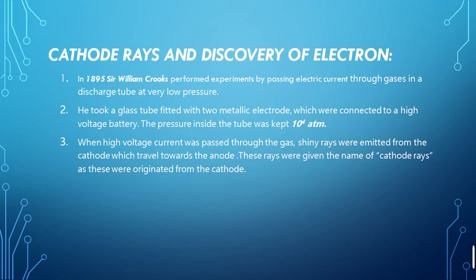The first discovery in the structure of the atom was the discovery of the electron, first considered as cathode rays. In 1895, Sir William Crookes performed an experiment by passing electric current through a gas in a discharge tube at very low pressure. He set up a glass tube with two electrodes — one positively charged and one negatively charged — connected to a battery. The pressure inside the tube was kept very low, at 10 to the power of minus 4 atmospheres. When high voltage current was passed through the gas, tiny rays were emitted from the cathode traveling towards the anode, named cathode rays.